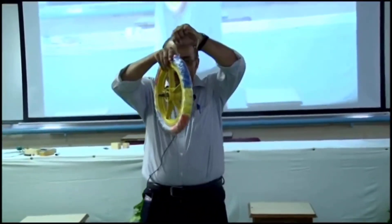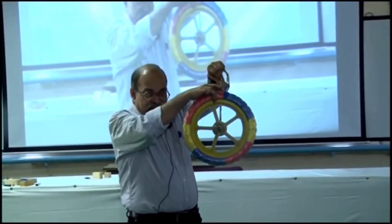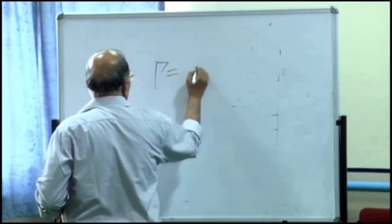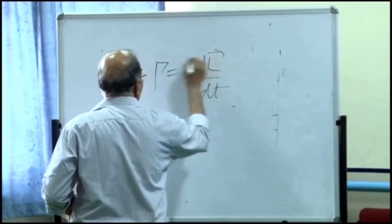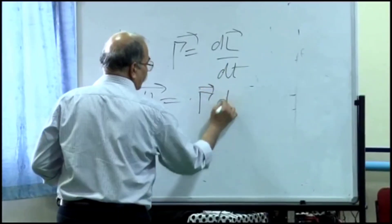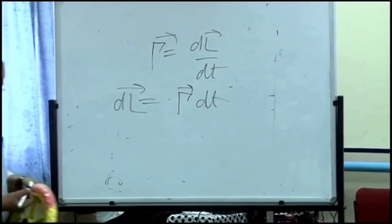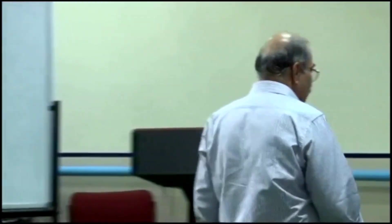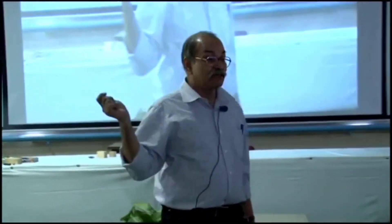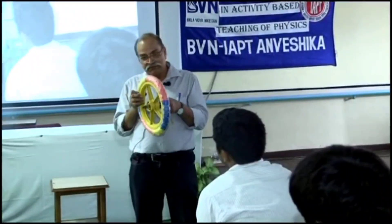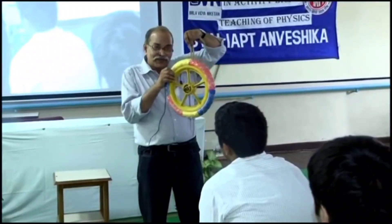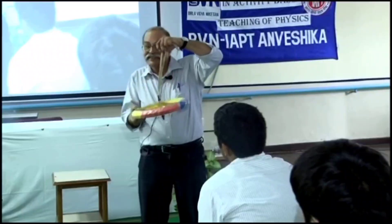When I just left it from here, the angular momentum was 0 to start with. Therefore when I applied a torque — which is DL by DT — DL should be equal to torque into DT. So change in angular momentum should be in the direction of torque. Since the initial angular momentum is 0, that DL has to be in the direction of torque, and therefore you saw that it picked up velocity in the direction of the torque itself.